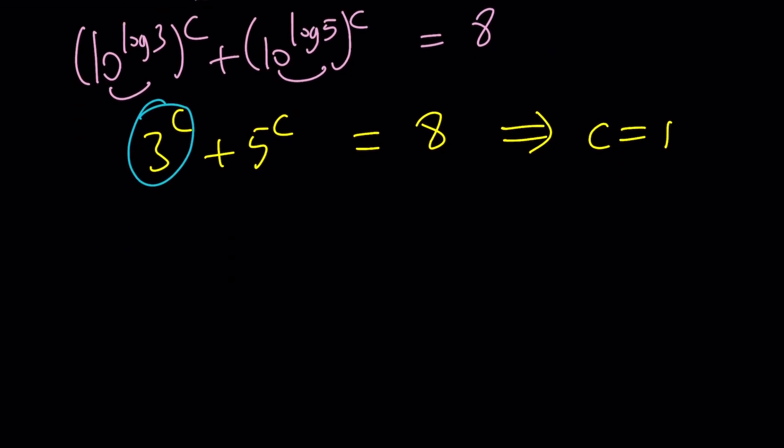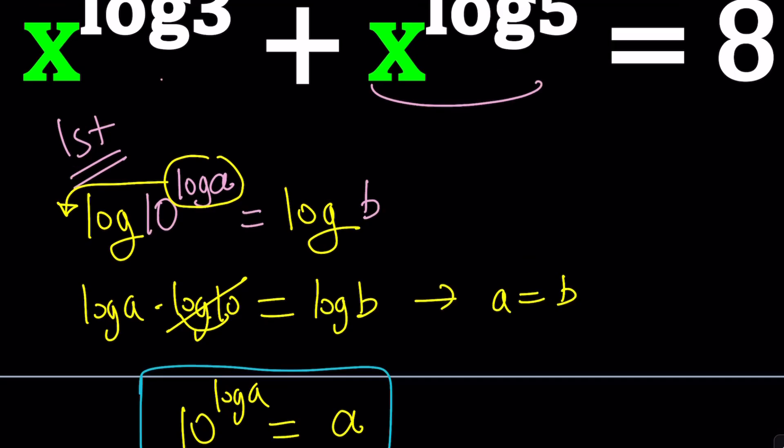Now, let's talk about why c equals 1 is the only solution, or is it the only solution? But let's do the second method first. Because I really like the second method, but I could be biased. I mean, you're going to get to decide which method is better.